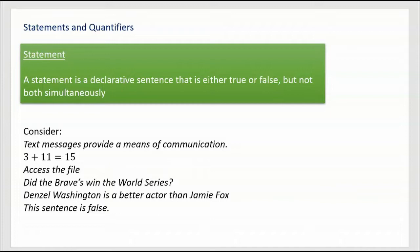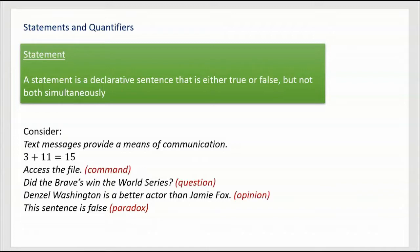Next: 'This sentence is false.' That's tricky because it seems like a statement. It's written like a statement. But this can be true and false simultaneously — it says it's false, but that could be a true statement. The fact that this sentence is false is a true statement. That's called a paradox. Any time a statement is true and false simultaneously, it's not a statement — it's a paradox.